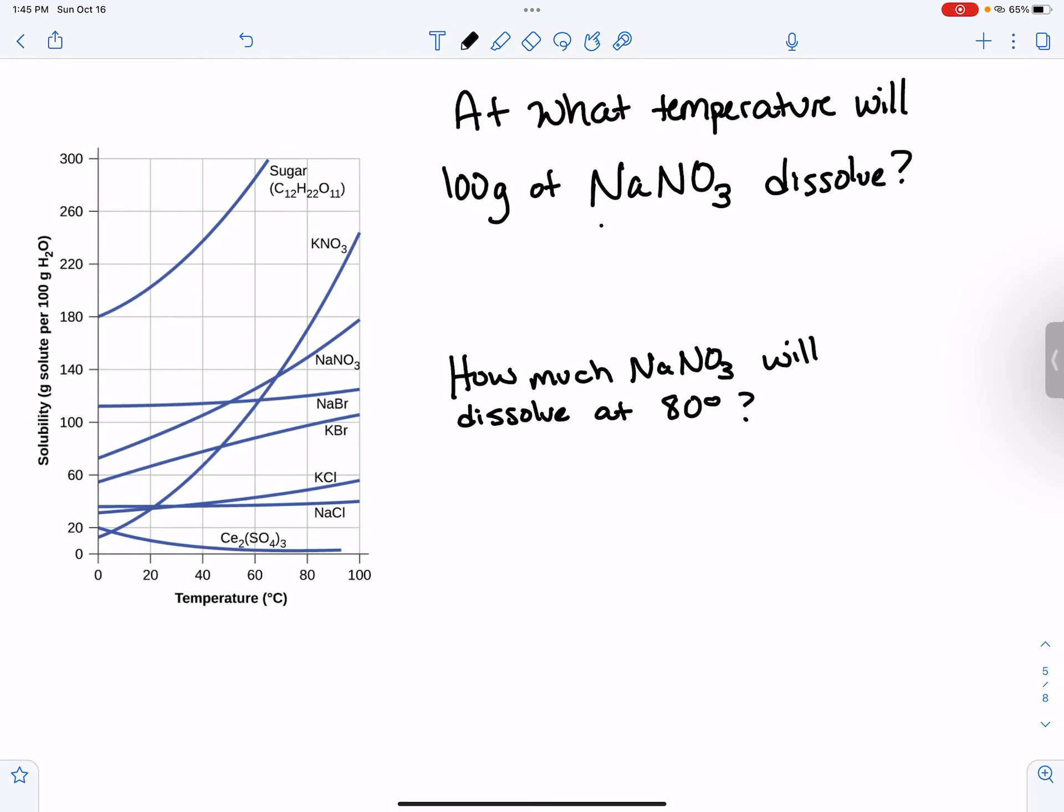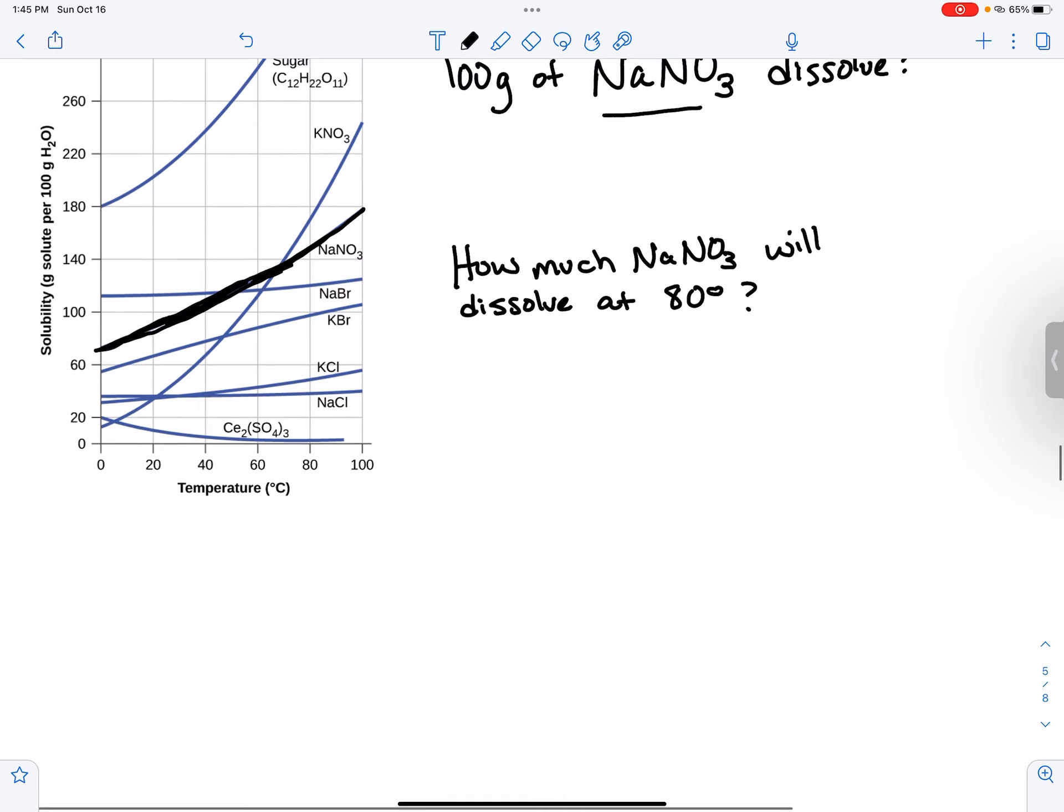You'll notice that we are talking about NaNO3, and remember with these graphs there are a lot of lines on it, but you're only supposed to focus on the line that they're talking about. So they are talking about this line right here, didn't color it very well, this line, they're talking about this one, and they aren't talking about any of the other lines that are on this page at all.